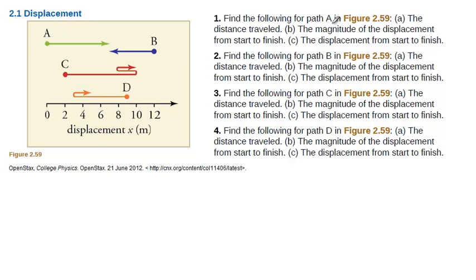Find the following for path A: distance traveled. So this is path A, magnitude of the displacement from start to finish, and part C asks for displacement from start to finish. Let's try to work on that.